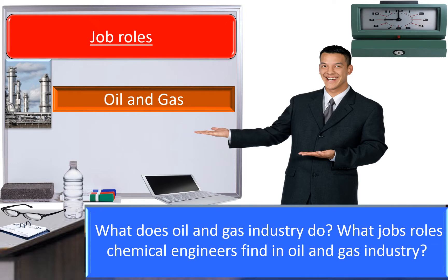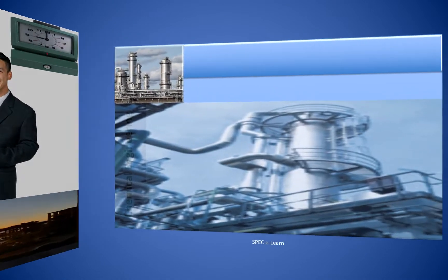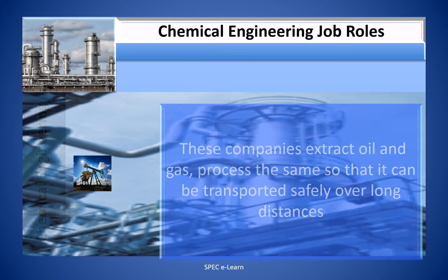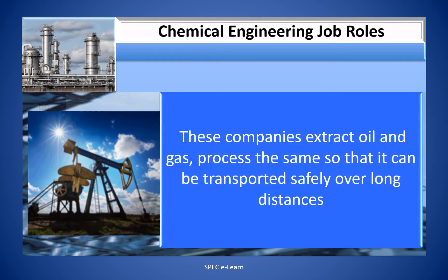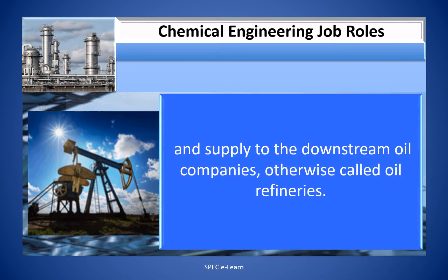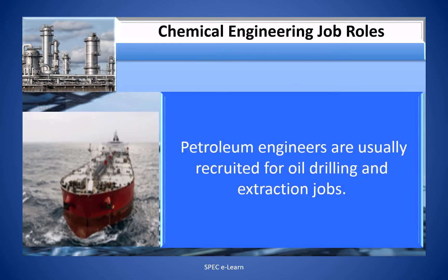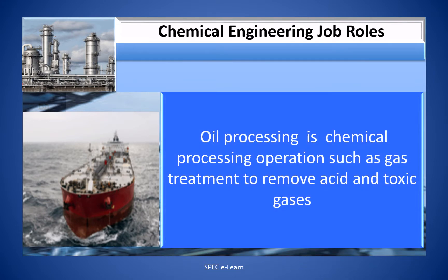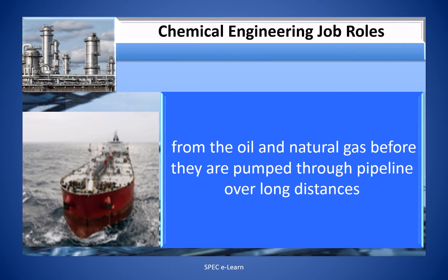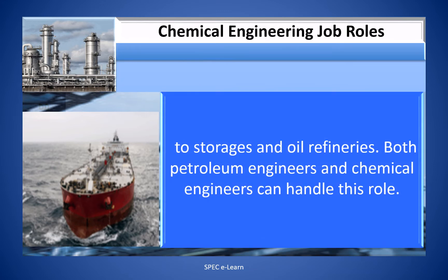What does the oil and gas industry do, and what job roles do chemical engineers find there? These companies extract oil and gas and process it so that it can be transported safely over long distances and supplied to downstream oil companies, otherwise called oil refineries. Petroleum engineers are usually recruited for oil drilling and extraction jobs. Oil processing — such as gas treatment to remove acid and toxic gases before pumping through pipelines to storage and refineries — can be handled by both petroleum engineers and chemical engineers.